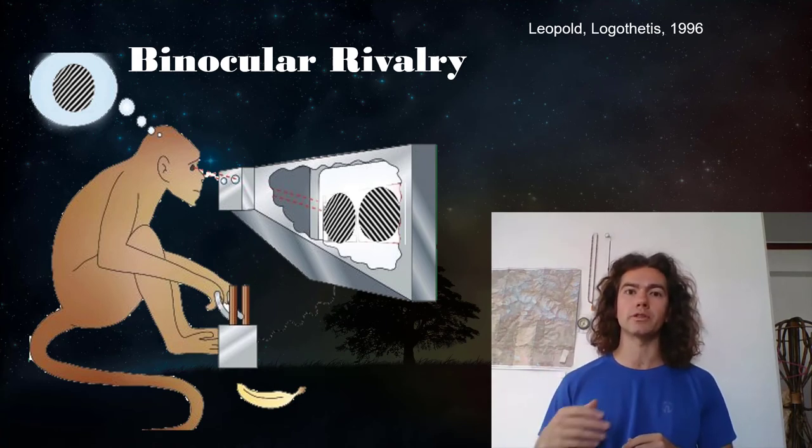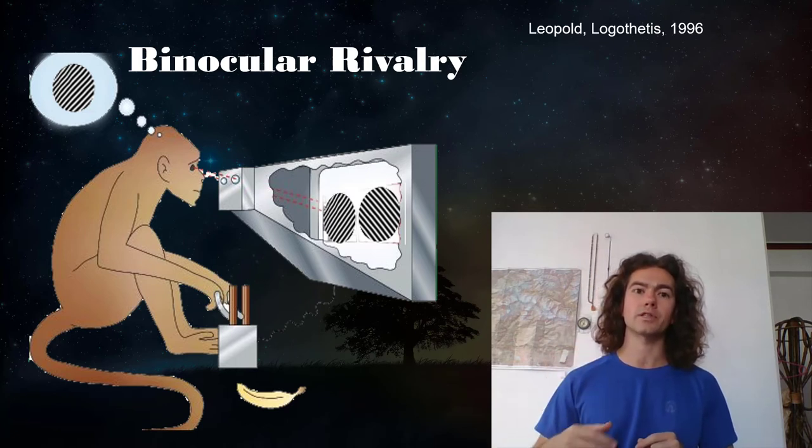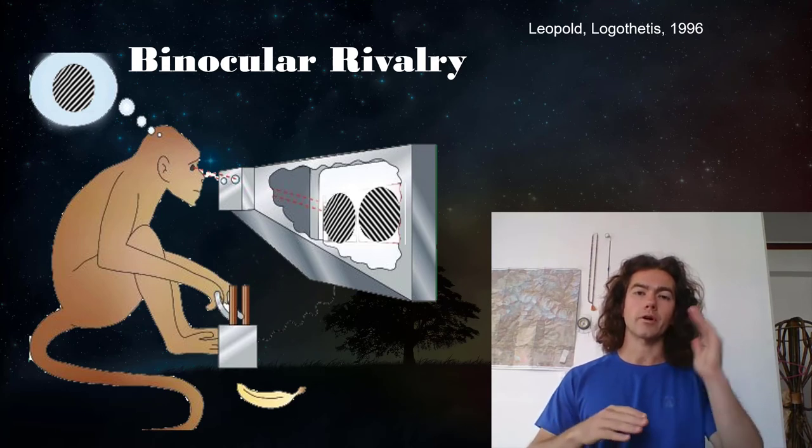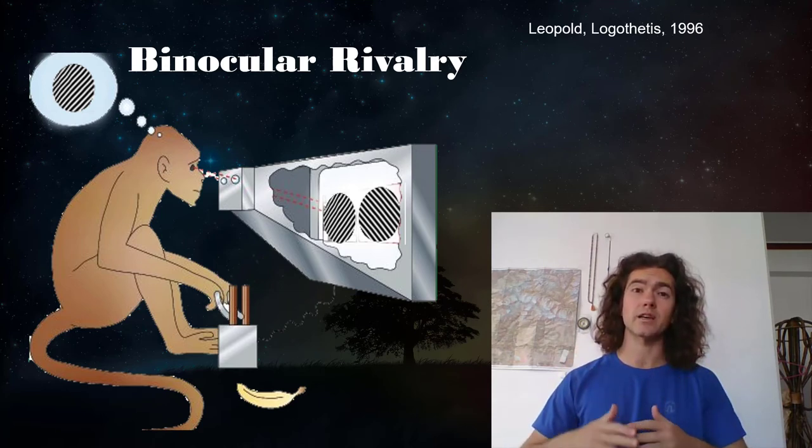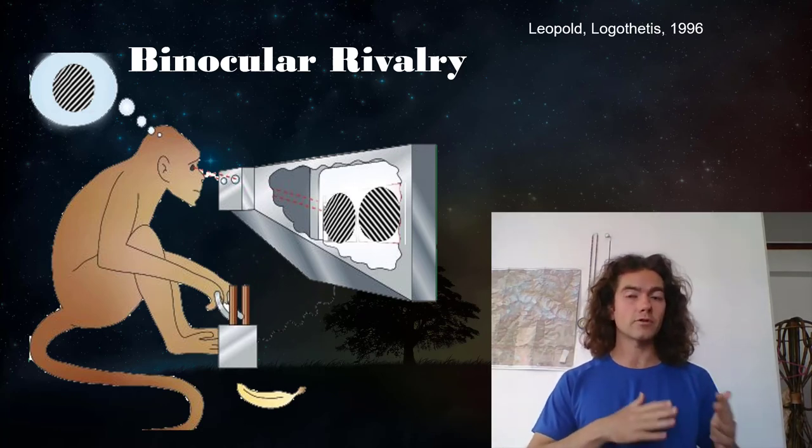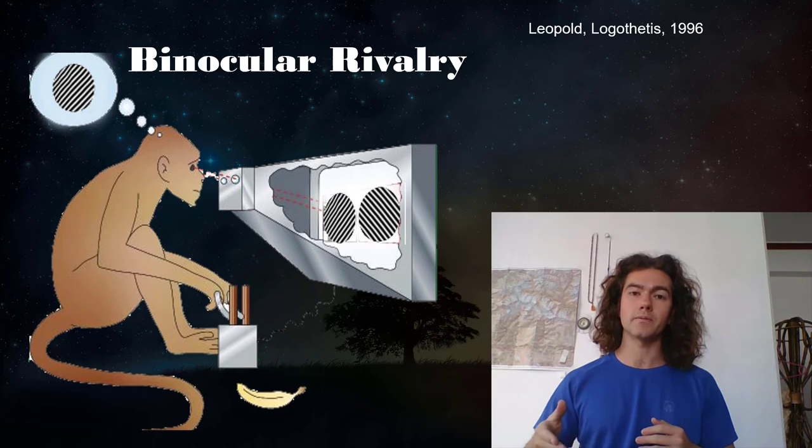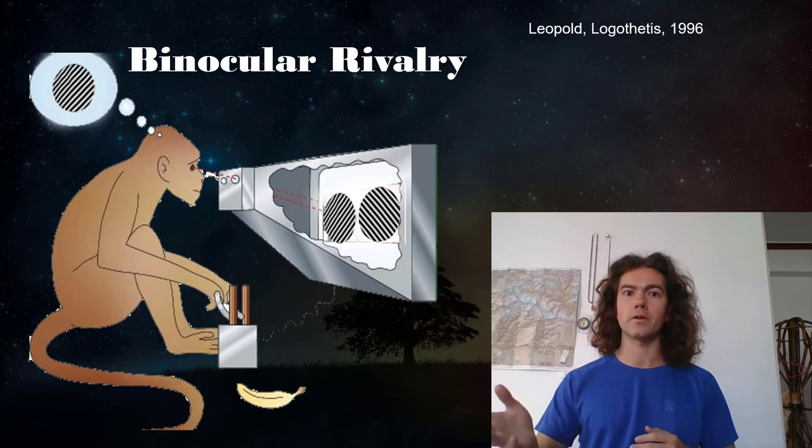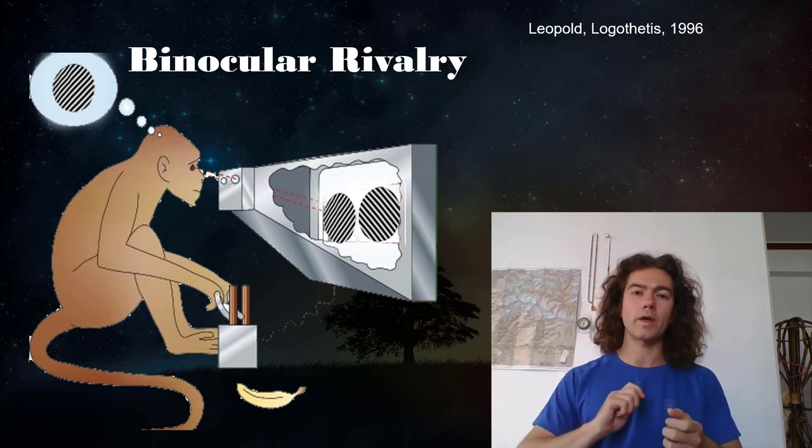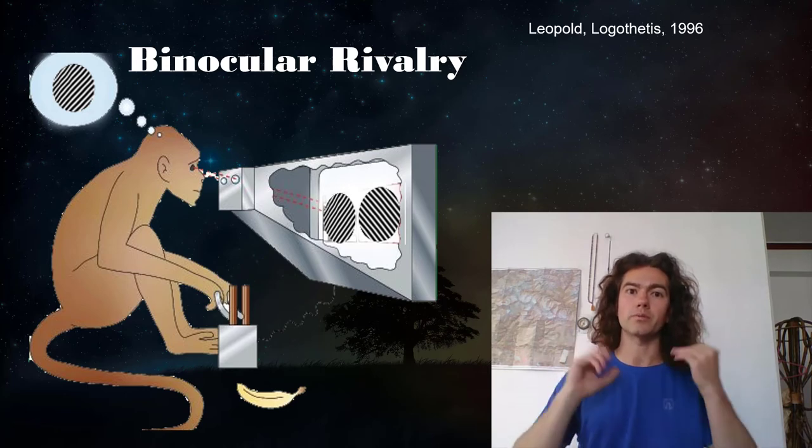And once the monkey gets to a point of being able to do this task with 95% accuracy, only then do they introduce these rivalrous trials where there are two different percepts, or two different stimuli, I should say, being presented to the two different eyes. And at that point, we now know that the monkey is well-trained to report with the two levers which of the two stimuli he's seeing. And we know from human experiments that the conscious percept alternates between the images shown to the two eyes. So now we have a way for the monkey to report to us the changes in his conscious perception, even though there's no change with the stimuli being presented to the eyes.